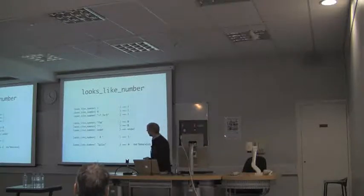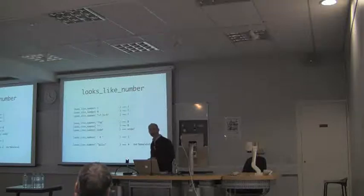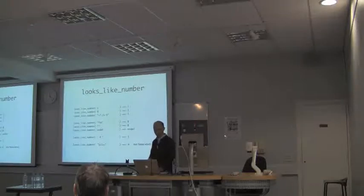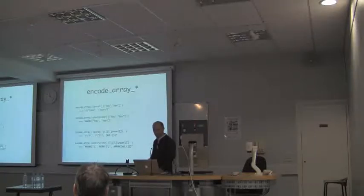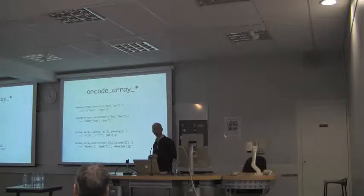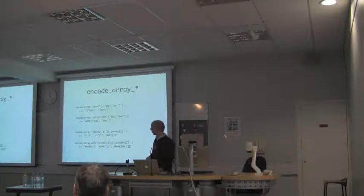Something that's not a Postgres built-in but is a Perl built-in is looks_like_number. There was some strange code in our stuff that decided if something is a number or not, so I added this. It uses the same logic that Perl uses to decide if something is a number. You can also now encode arrays as the literal syntax using braces or the array constructor syntax using ARRAY and square brackets.